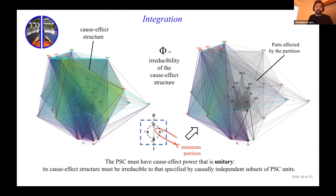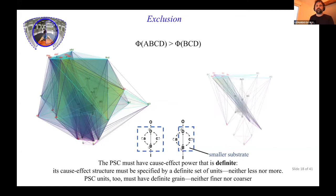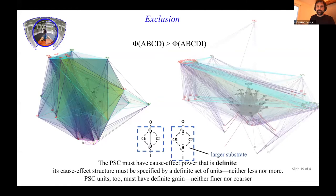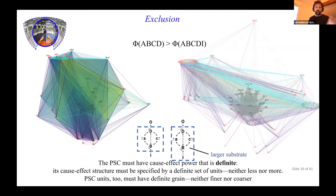We can call this value phi — it's just a number. We do the computations and say this structure has this amount of intrinsic integrated information, or intrinsic cause-effect power. To satisfy exclusion, you test all possible subsets in the universe — not only ABCD but ABC, and possibly ABCDI — and each one that has ABCD as a subset must have a smaller phi. If this is the case, the structure has phi-max and we say it is a conscious physical system.